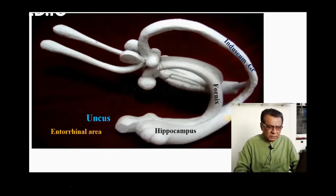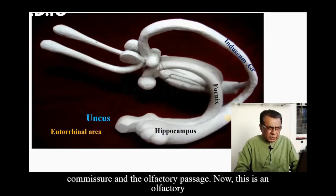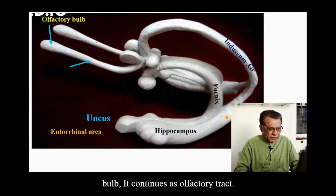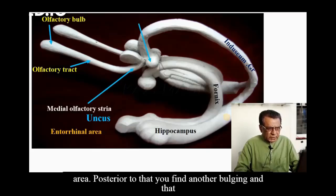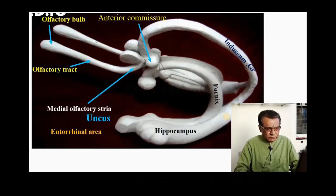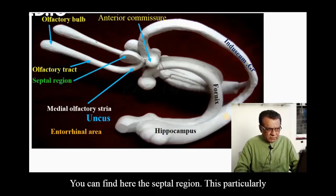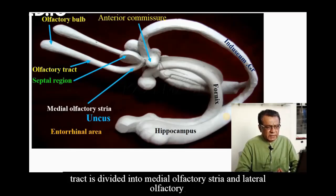Here is a model of the limbic system to demonstrate the details of the anterior commissure and the olfactory passage. This is the olfactory bulb, which continues as the olfactory tract, ending into the medial olfactory area and lateral olfactory area. Posterior to that you find another bulging, and that is called the anterior commissure, which connects one temporal lobe to the other temporal lobe. Here you can also find the septal region. The olfactory tract is divided into the medial olfactory stria and the lateral olfactory stria.